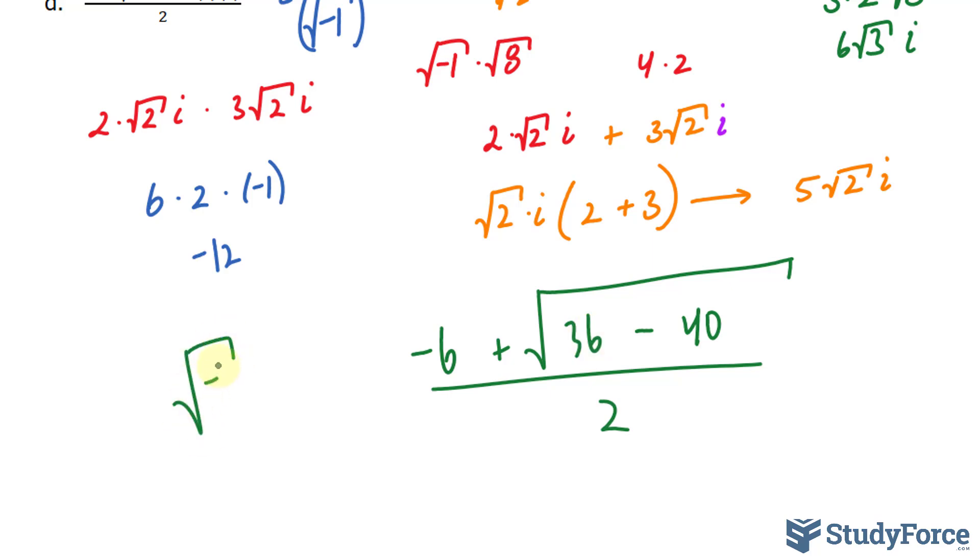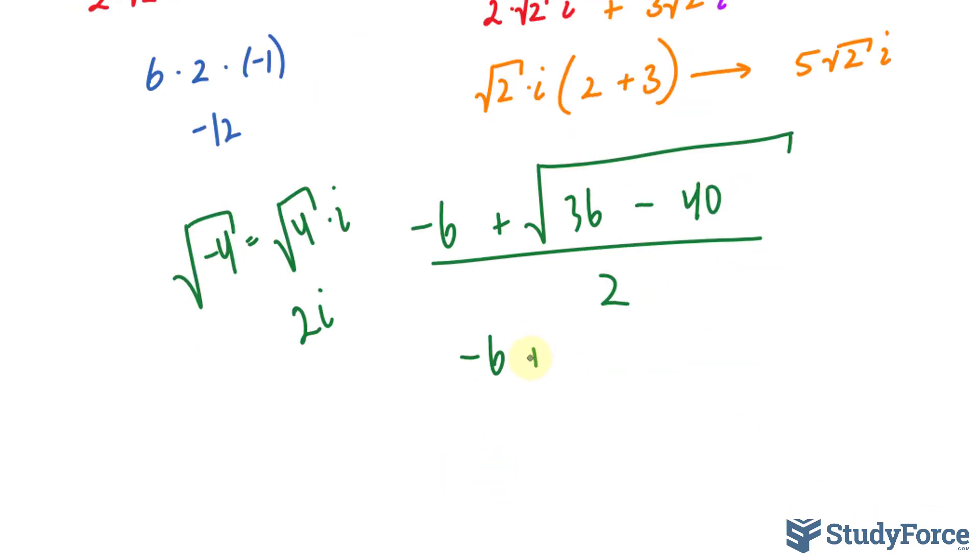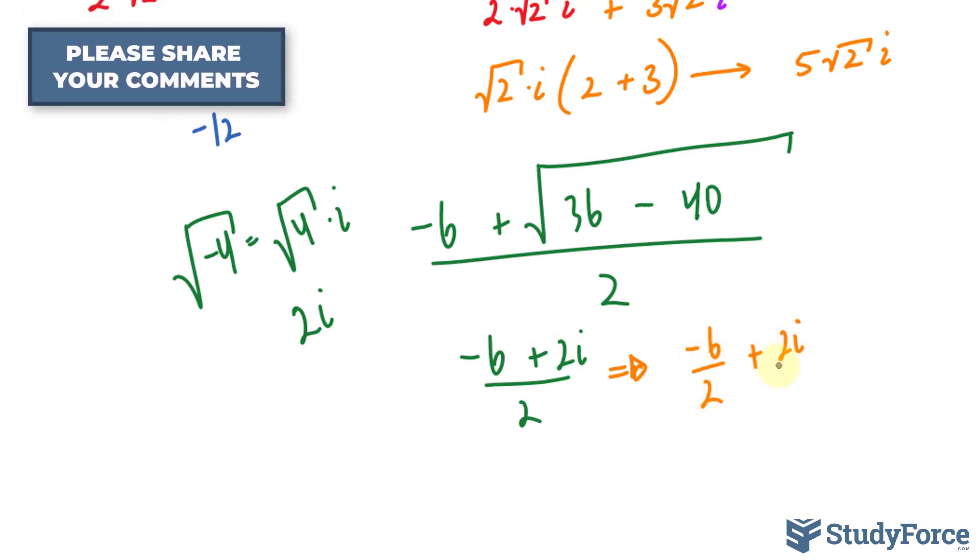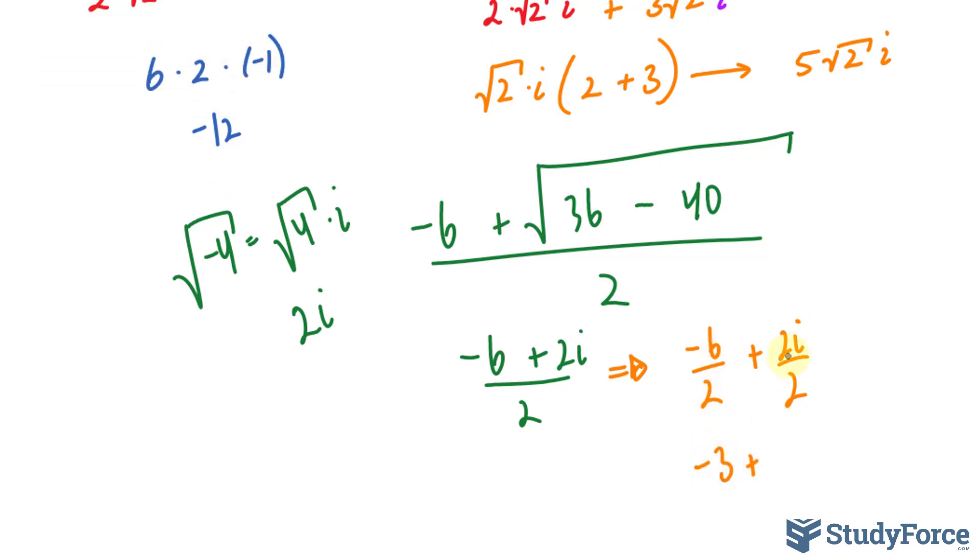So we have the square root of negative 4, which is equivalent to the square root of 4 times i. That's a perfect square. We have 2i. So negative 6 plus 2i over 2. We can continue by taking this 2 and making it a denominator for both of the terms above. Negative 6 divided by 2 is negative 3. And 2 divided by 2 is 1. So we end up with negative 3 plus i.